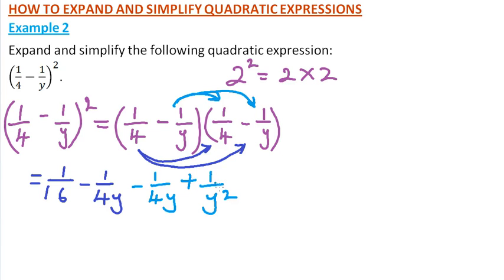1 squared is the same as 1. From there, we can now add the like terms. So this is equal to 1 over 16 minus 1 over 4y minus 1 over 4y, which gives us minus 2 over 4y, and then we have 1 over y squared.